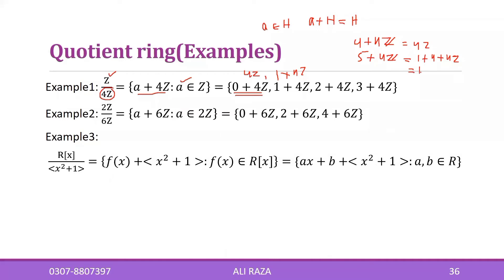So one plus 4Z is already present. Similarly, adding six: four gets absorbed, leaving two — also already present. The same happens with seven and eight. This means the distinct elements you get are only these four. Whatever integers you keep adding, their remainder falls into one of these four cosets.